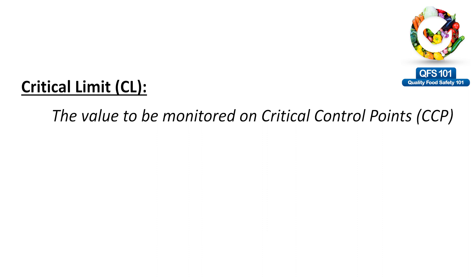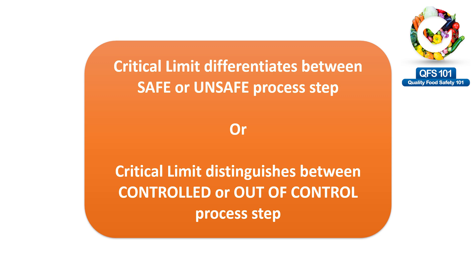So what are critical limits? Critical limits are the values which have to be monitored on critical control points. They are not a step, not a process step, not a standard. They are a number, or a series of numbers, or maybe two different numbers merged together. They are values or numbers which have to be monitored on a CCP. The number one property of a critical limit is that it is going to distinguish between a safe or unsafe step, or determine whether the process is under control or out of control.